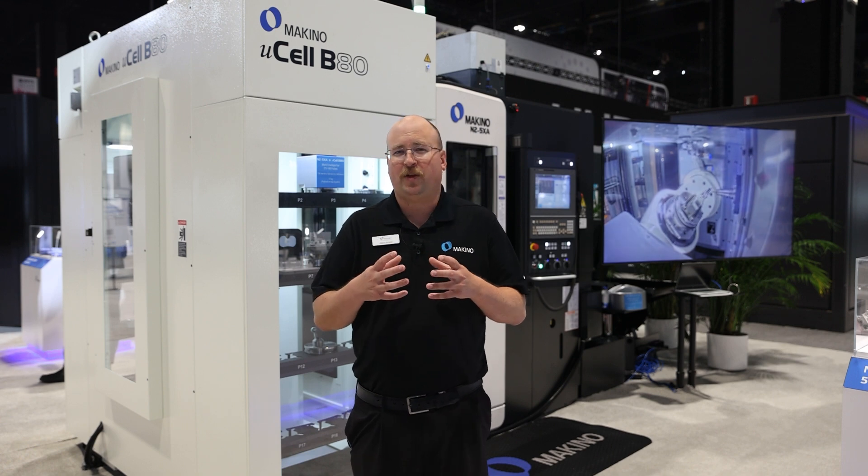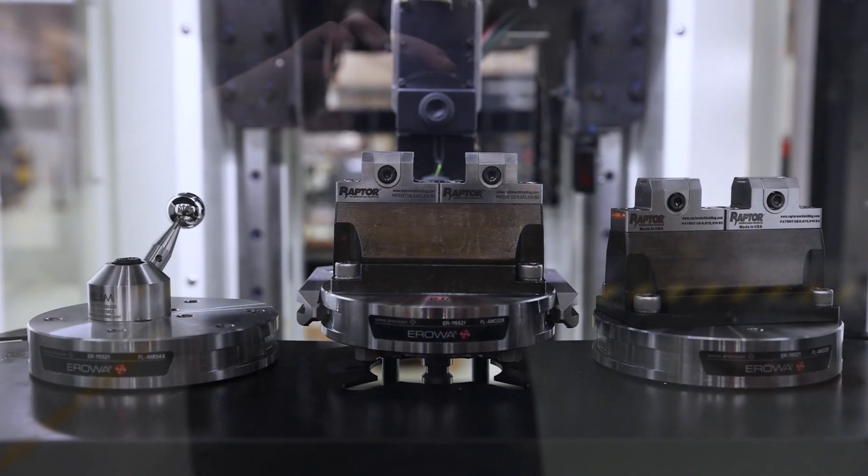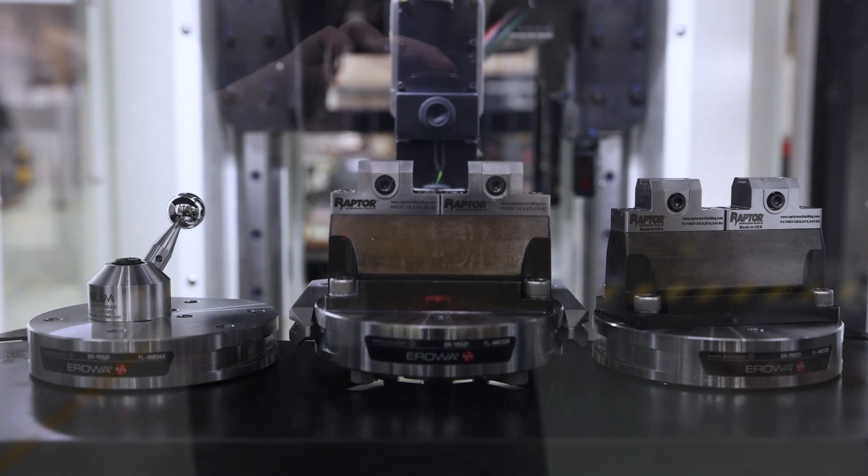We can have multiple different size pallets in the system. We can change grippers out. We can have a flip gripper on there and we can serve two machines with this cell.